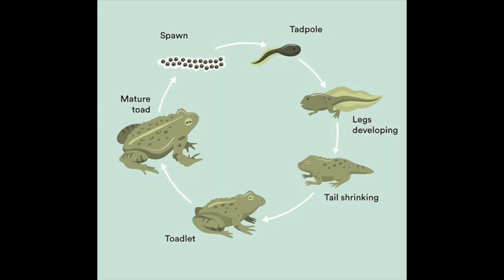A life cycle is how a living thing grows and changes. For frogs and toads that means starting out as eggs in water, then they become tadpoles, their legs develop, their tails shrink, and they grow a little more before becoming mature or adult frogs and toads.